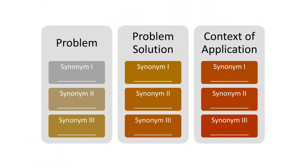Looking closely at this template, in the LCI there are three things which are very clearly depicted. First, we have to look for the problem as an important keyword. Second, it asks us to look for the problem solution. And third, it asks us to look for the context of application. Let's try to understand why these three words are required when we go for the literature search, starting with the keyword search process.